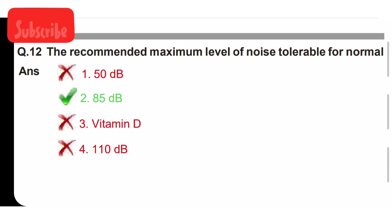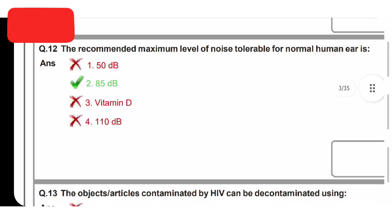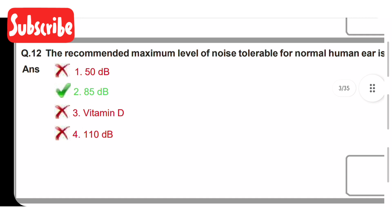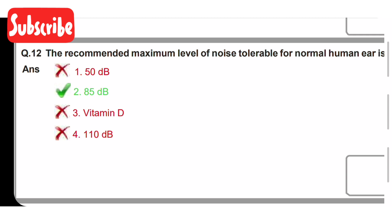The recommended maximum level of noise tolerable for the normal human ear is: option one is 50 decibels, option two is 85 decibels, option three is 110 decibels, option four is 120 decibels. 85 decibels is the normal noise tolerance for the human ear.